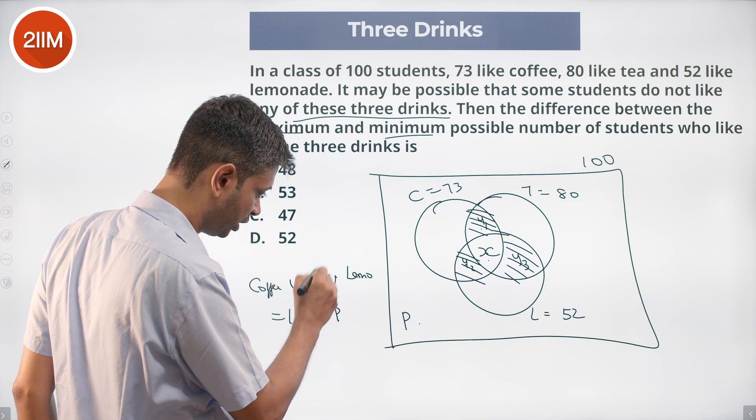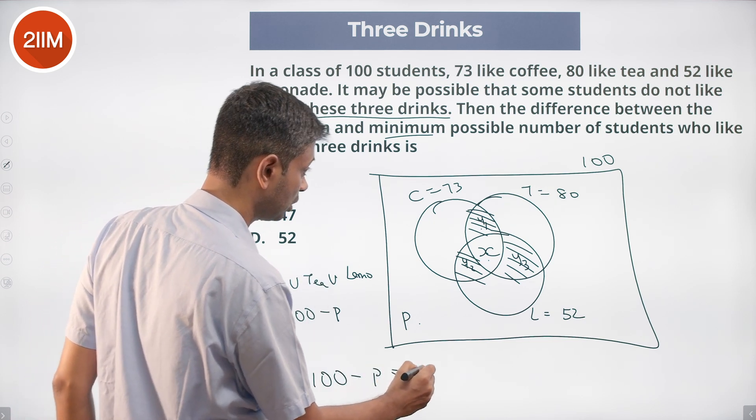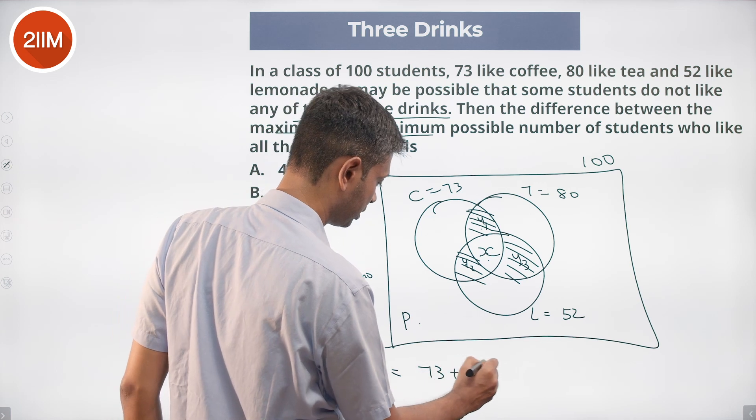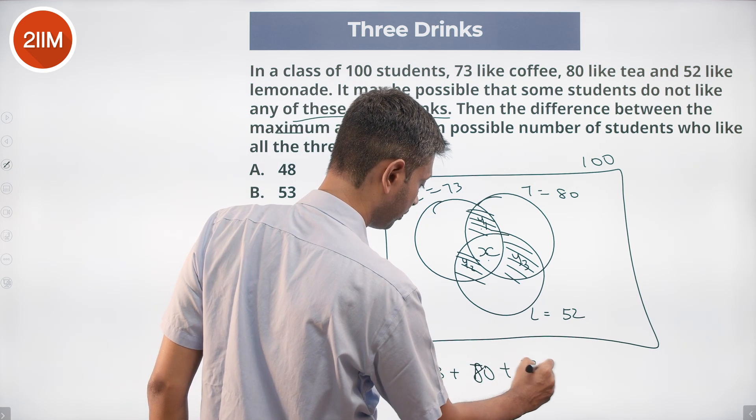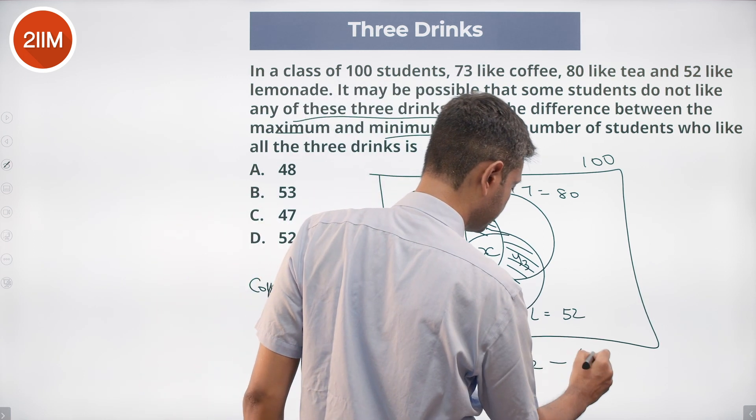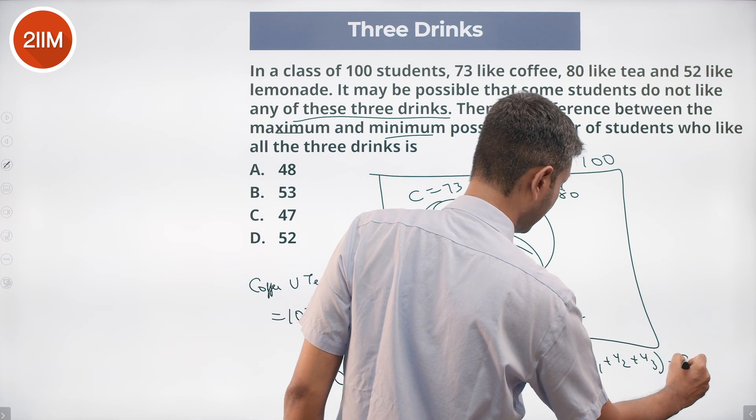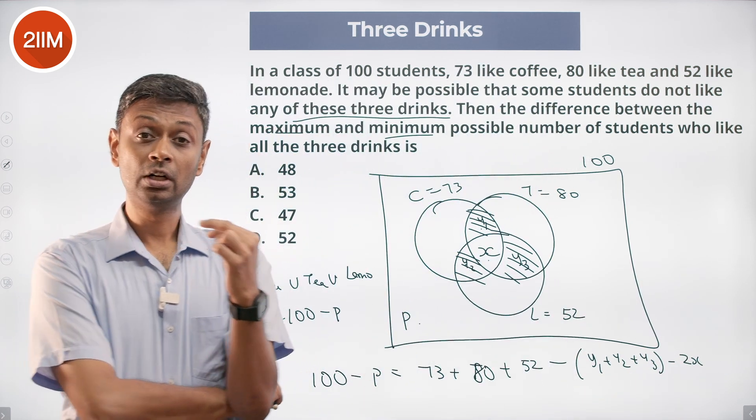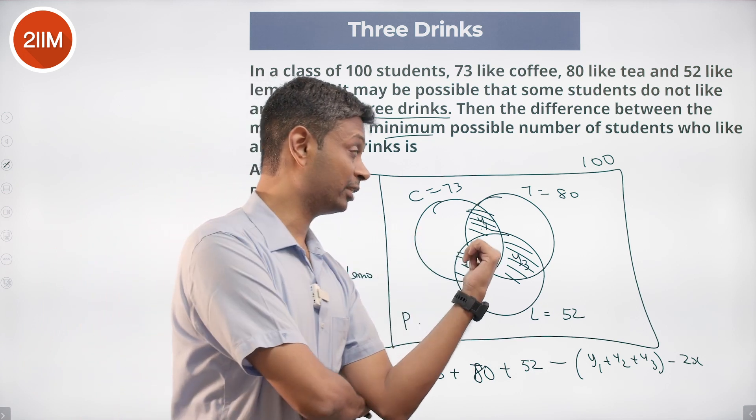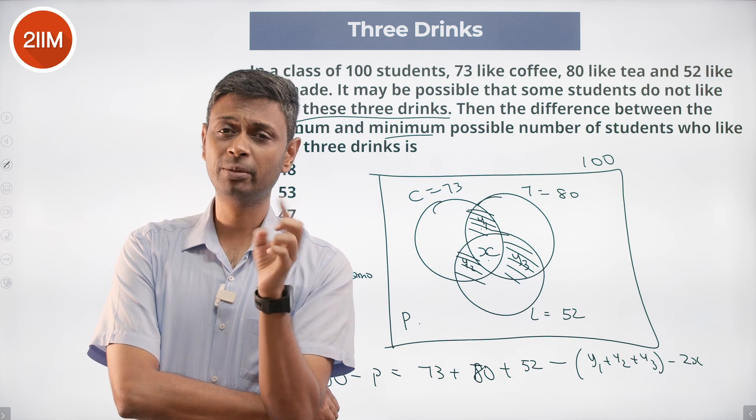So this 100 minus p, which is coffee union tea union lemonade, should be equal to coffee plus T which is 80, plus lemonade minus y1 plus y2 plus y3 minus 2x. I'm subtracting these because I have appeared double. I'm doubly subtracting that x because it has appeared triple.